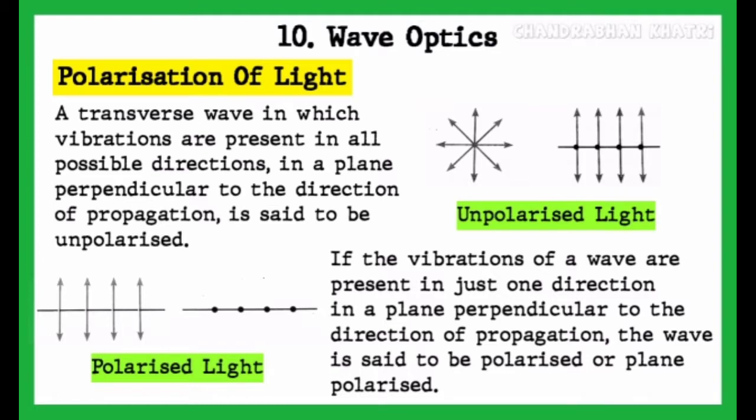As you can see in this diagram, unpolarized light is denoted when the vibrations of a wave are present in all directions. If the vibrations are present in just one direction in a plane perpendicular to the direction of propagation, the wave is said to be polarized or plane polarized, as shown in this diagram.